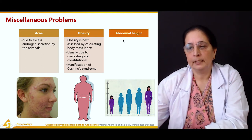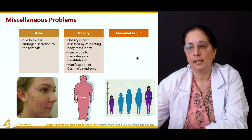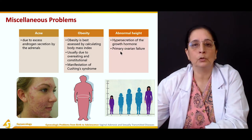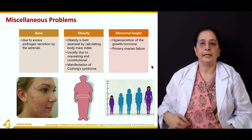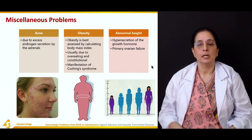Then there is abnormal height, which can be due to hypersecretion of the growth hormone or due to primary ovarian failure.